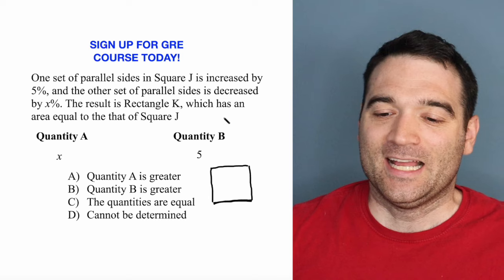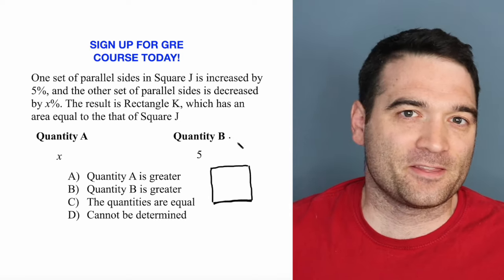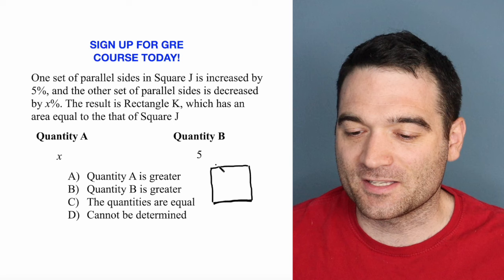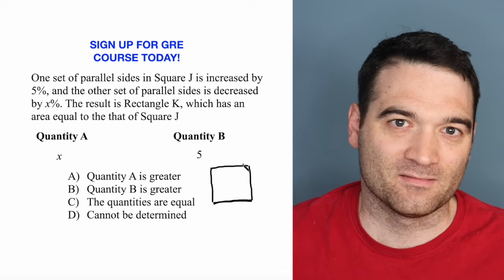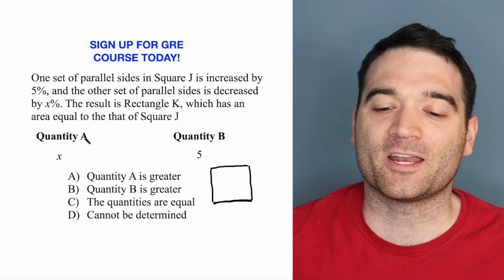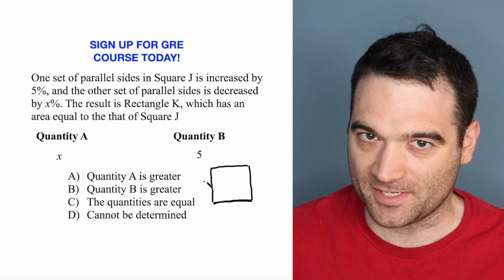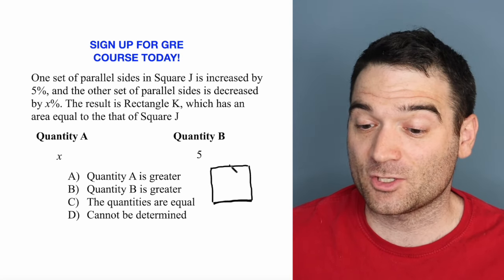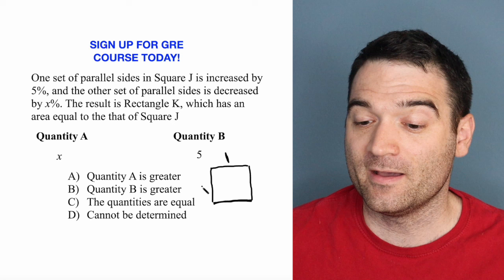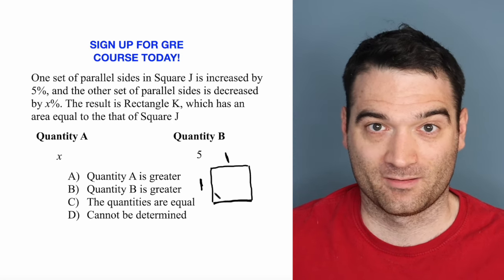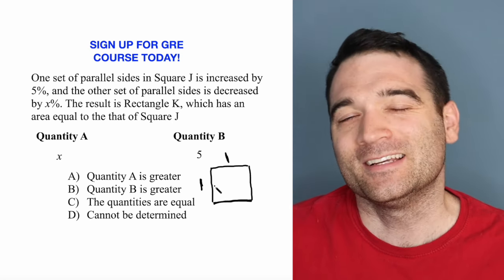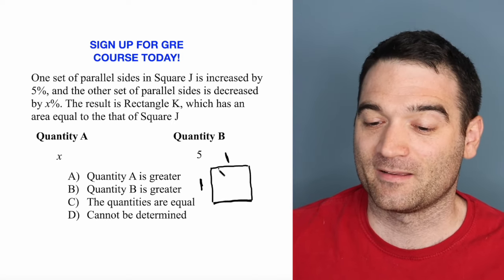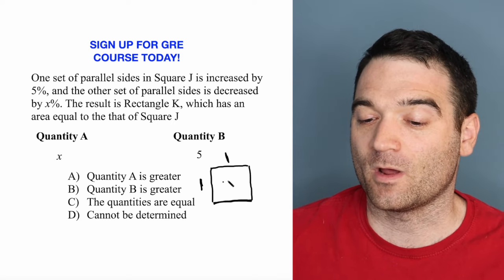A square has four equal sides. The thing about this problem is it doesn't matter what the dimensions are. This could be a distance of one or a billion. It doesn't matter because we're only talking about percent increases and decreases. So I'm just going to arbitrarily say that square J is a one by one square. If you don't trust me on this, try this problem again with different numbers. You'll see it comes out to the same thing.